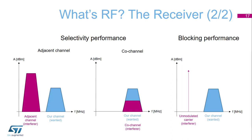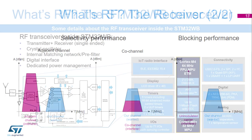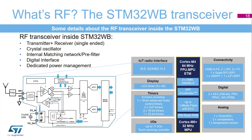The STM32WB transceiver: here are some details about the RF transceiver inside the STM32WB. The RF part of the STM32WB IoT radio interface consists of a transmitter, receiver, crystal oscillator, internal matching network and pre-filter, mixers, intermediate frequency stages with bandpass filters, digital interface, and dedicated power management.